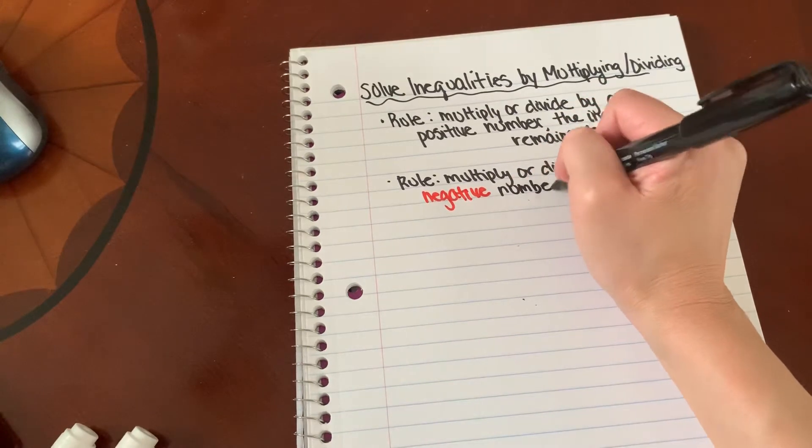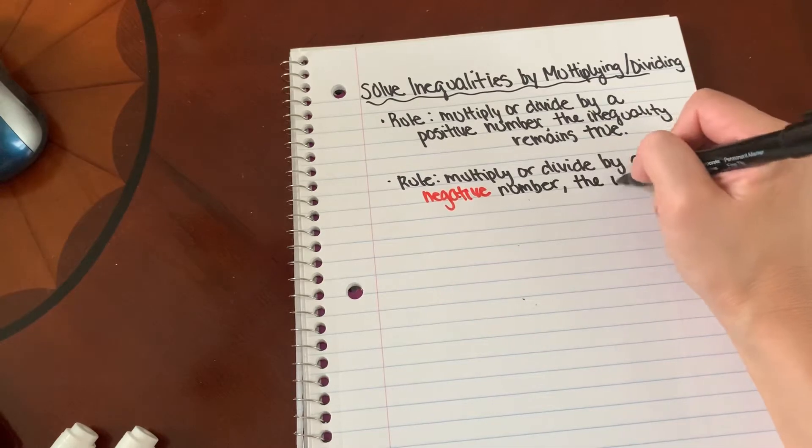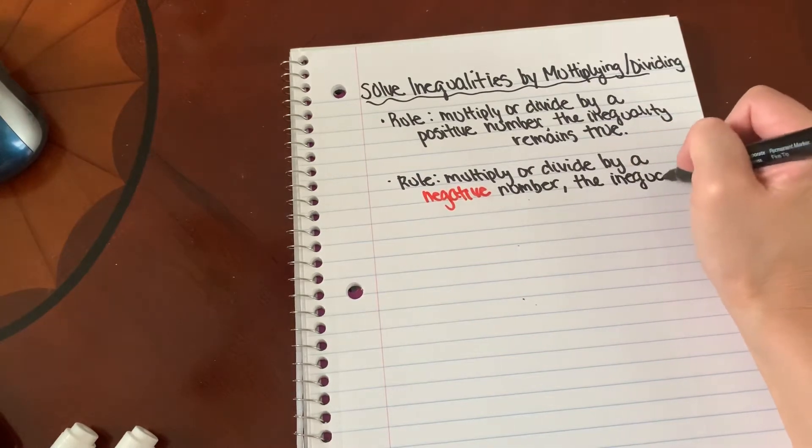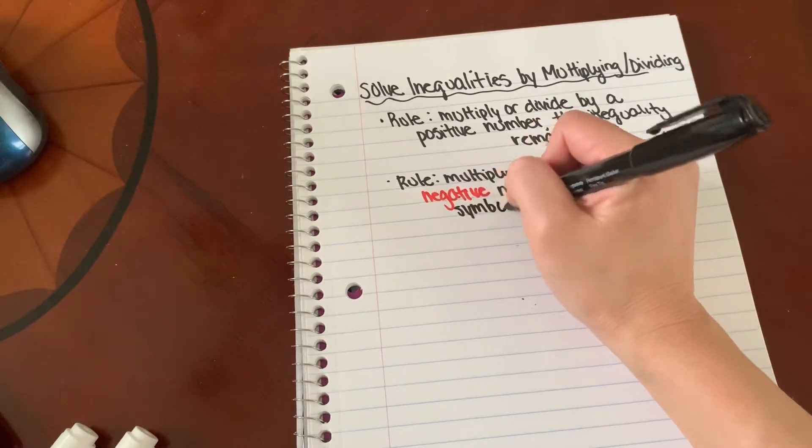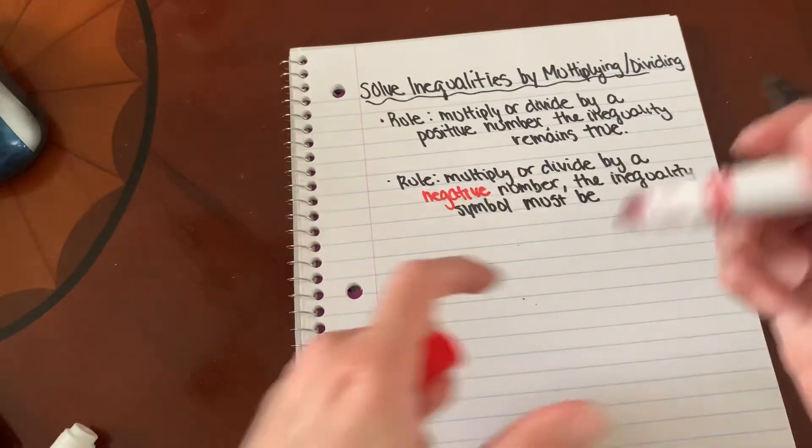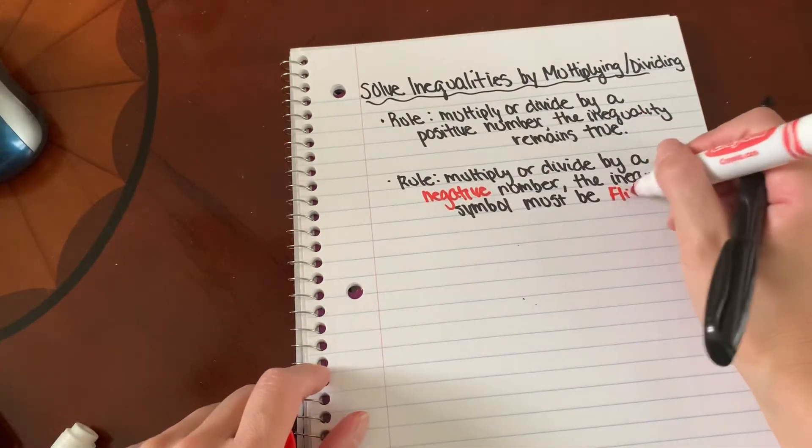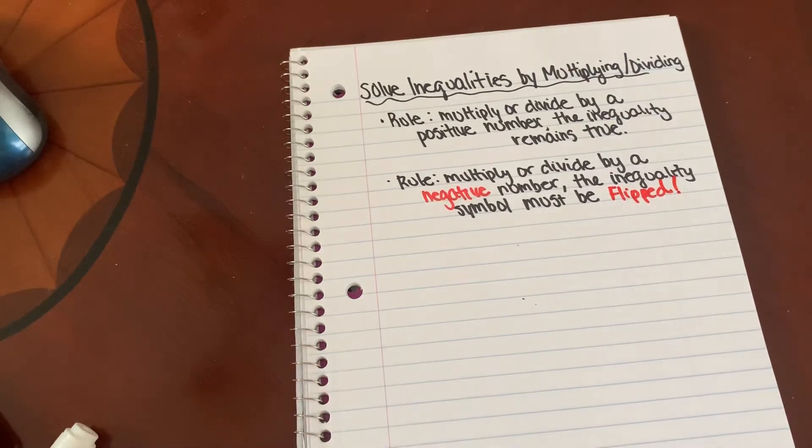this is very important, the inequality symbol must be flipped in order for the inequality to remain true.